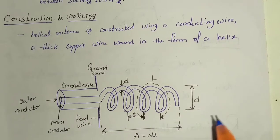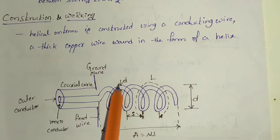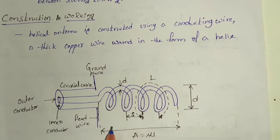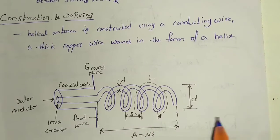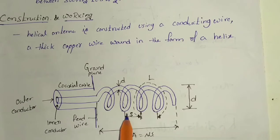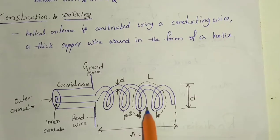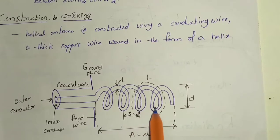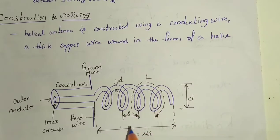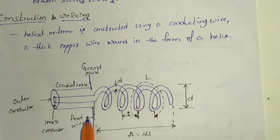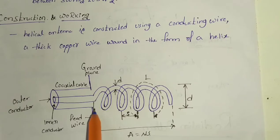The diameter of the copper wire is d, and the diameter of the helix conductor is D. The axial length is the total length. The spacing between one turn to another turn is s. The length of one complete turn is denoted by l. The small l is the feed length — this is the feeding wire, and the distance between the feed points is the feeding length.